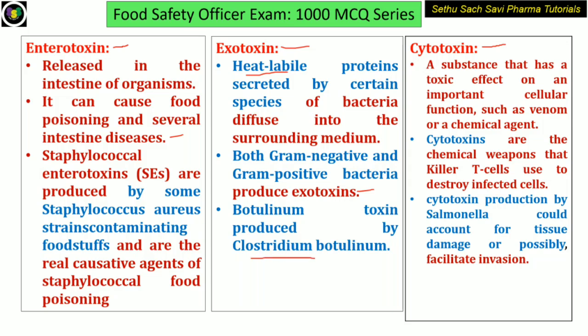Coming to cytotoxin: cytotoxin is mainly important for impairing the cell functions. A substance that has a toxic effect on important cellular functions, such as a venom or chemical agent — these are mainly acting on the killer T cells. One example of these is Salmonella. The cytotoxin produced by Salmonella can account for tissue damage and possibly facilitate invasion.